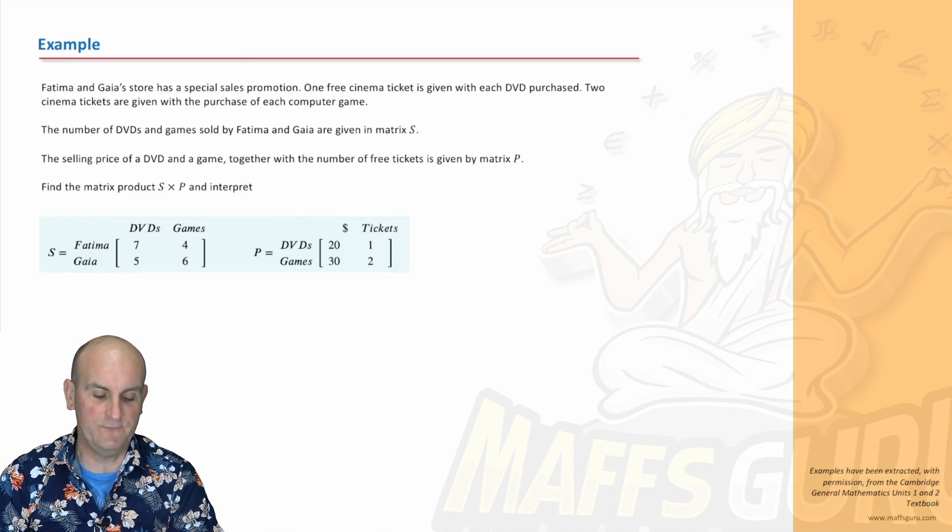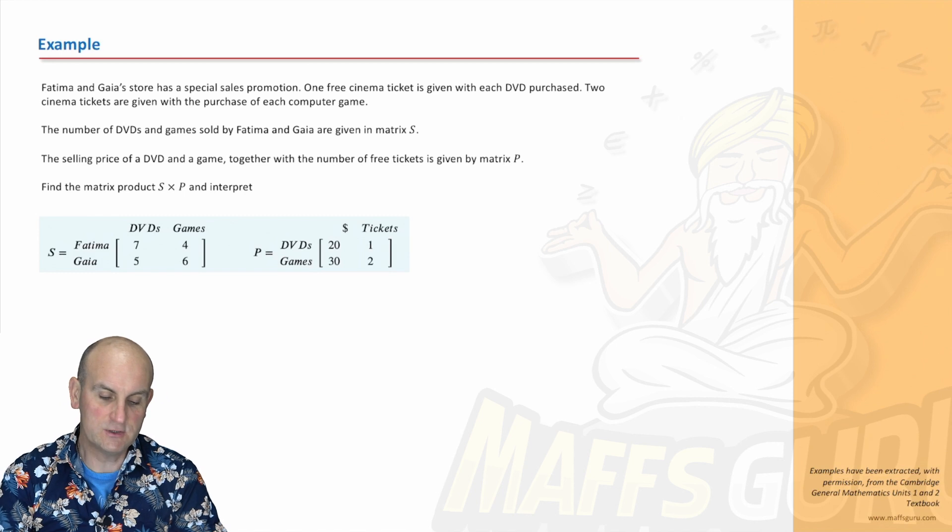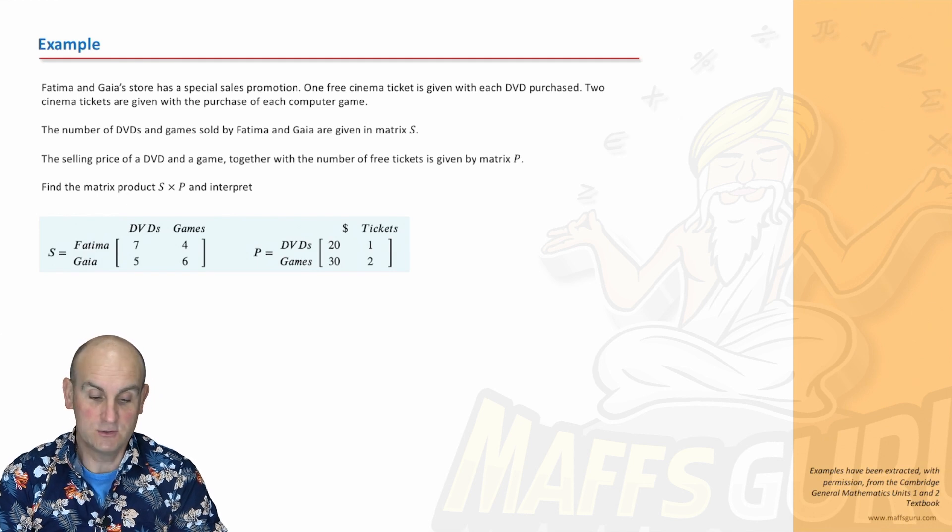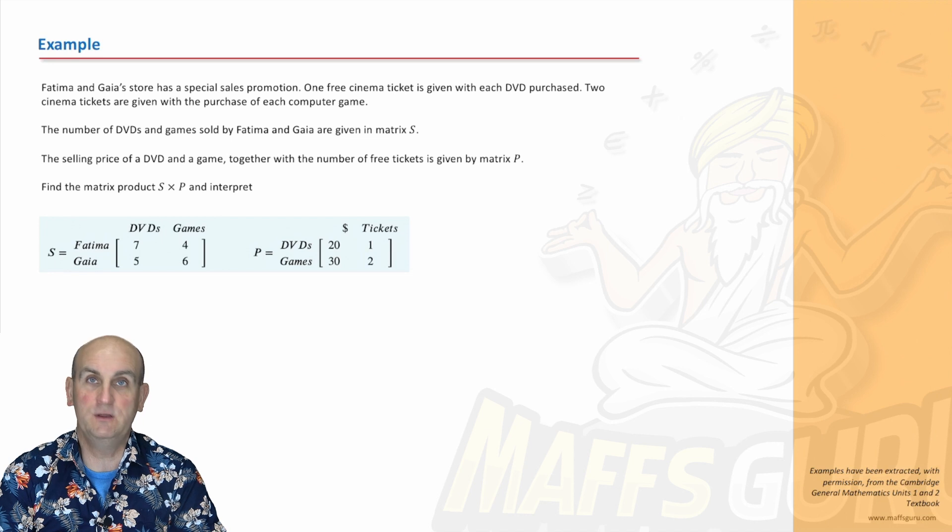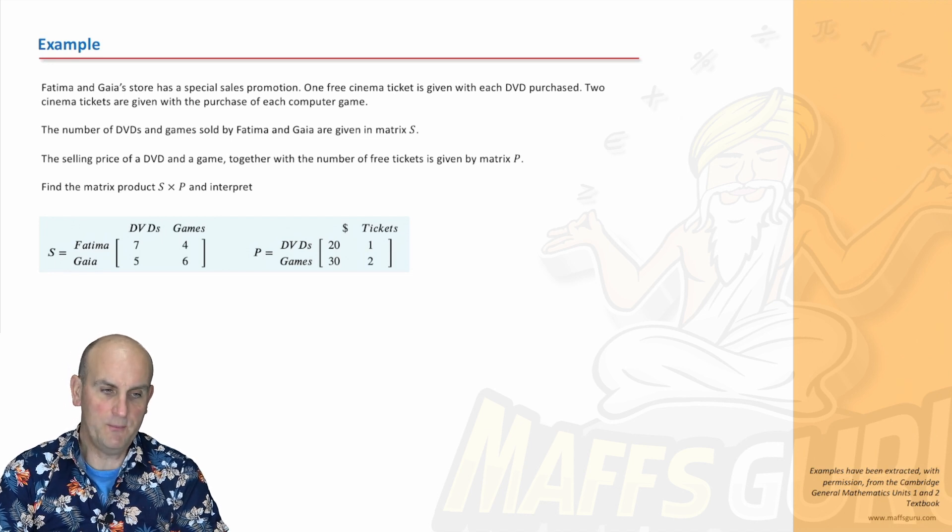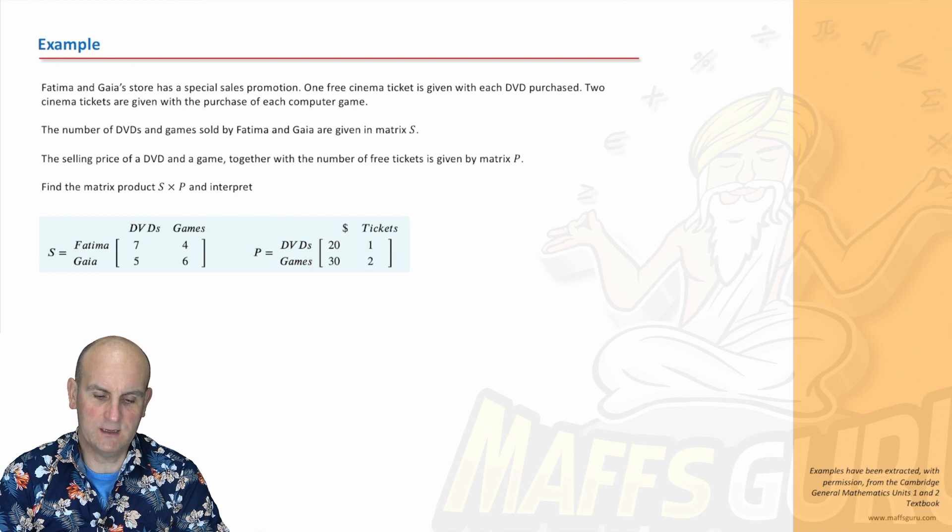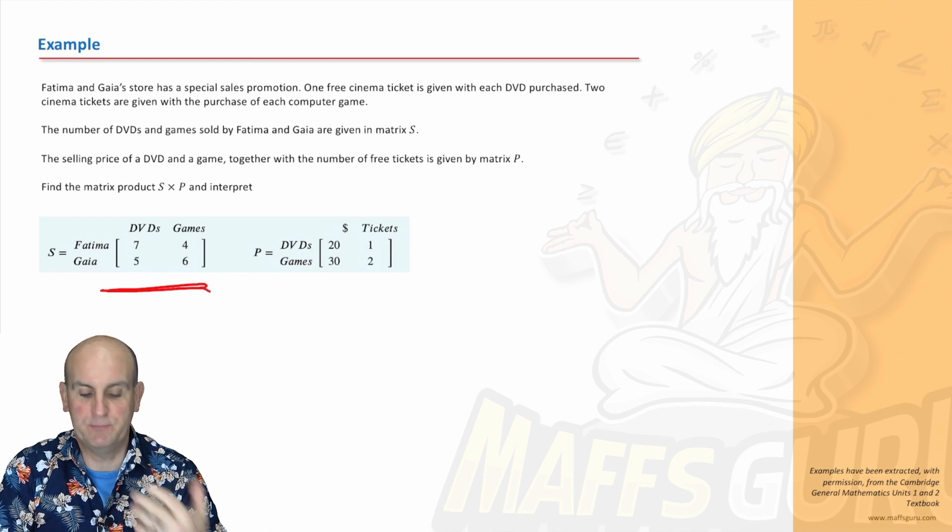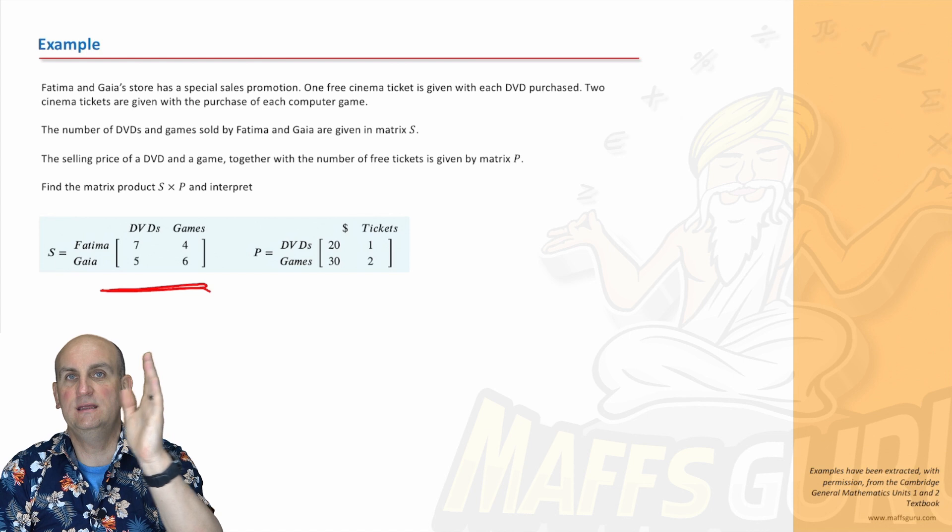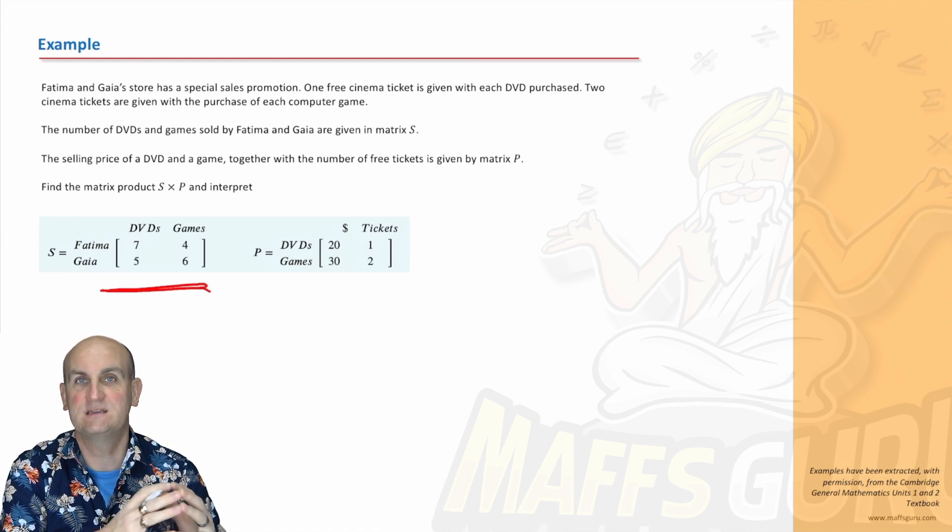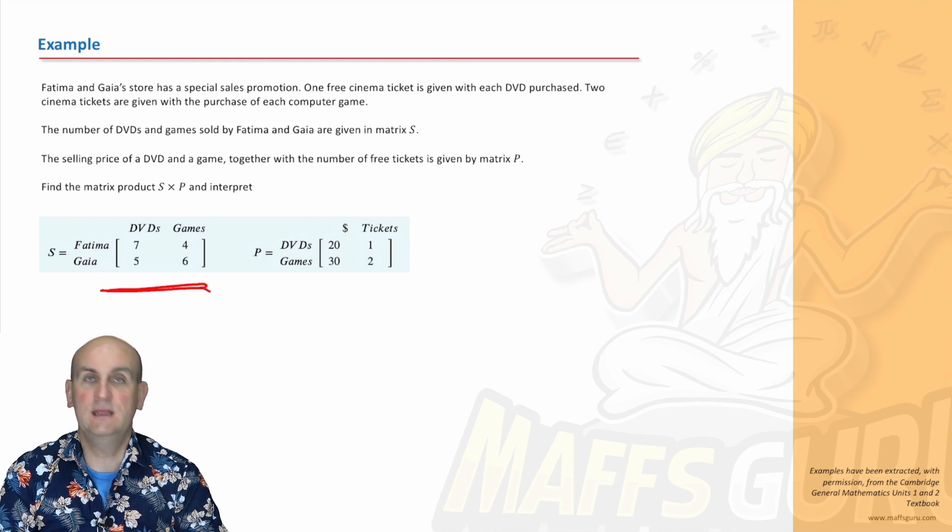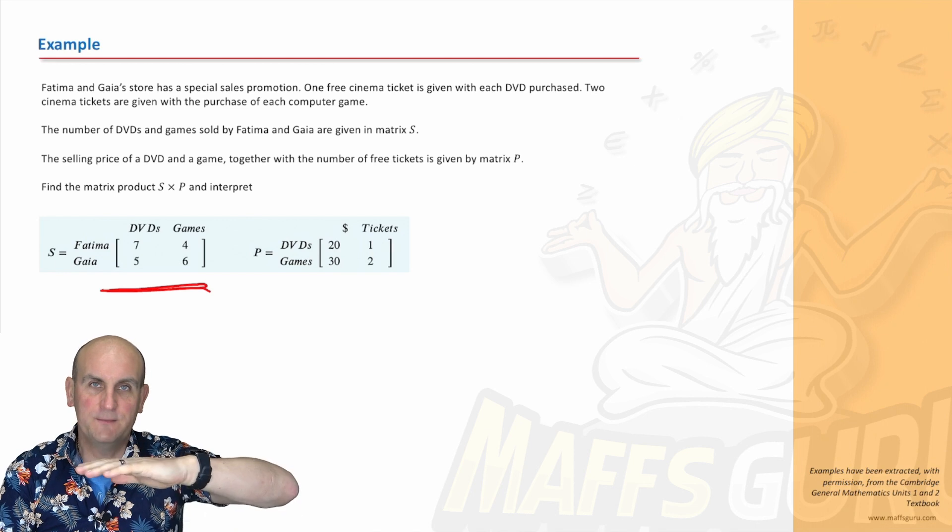Example. Fatima and Gaia's store has a specialist sales promotion. One free cinema ticket is given with each DVD purchased. Two cinema tickets are given with the purchase of each computer game. The number of DVDs and games sold by Fatima and Gaia are given by Matrix S.